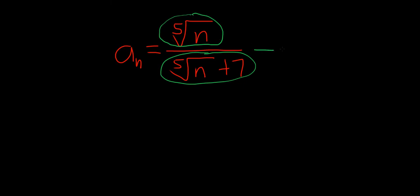So the answer is going to be the ratio of the leading coefficients. The leading coefficient here is 1, here it's 1. So as n approaches infinity, this will approach 1 over 1, which is equal to 1.